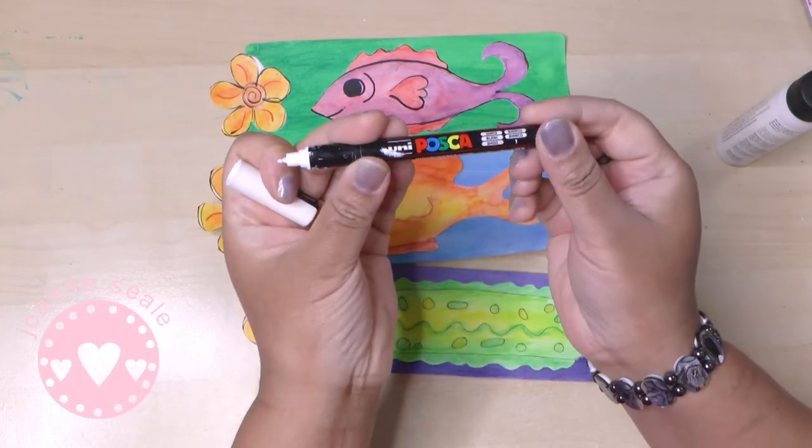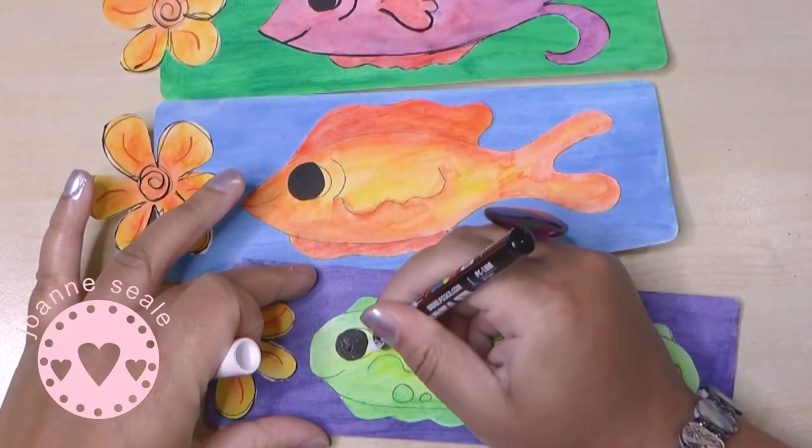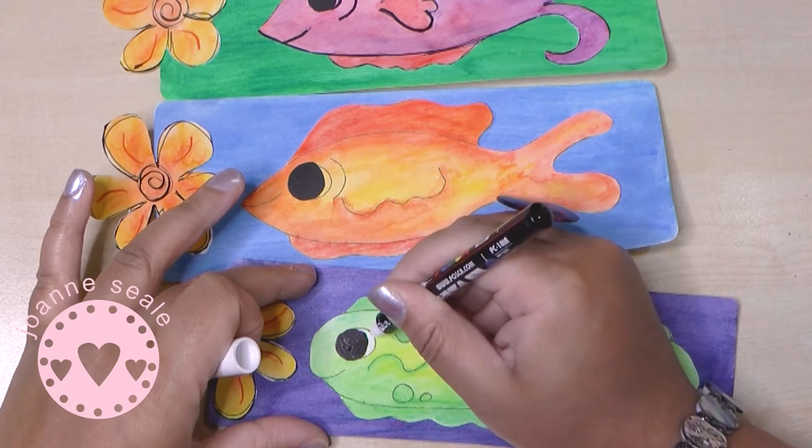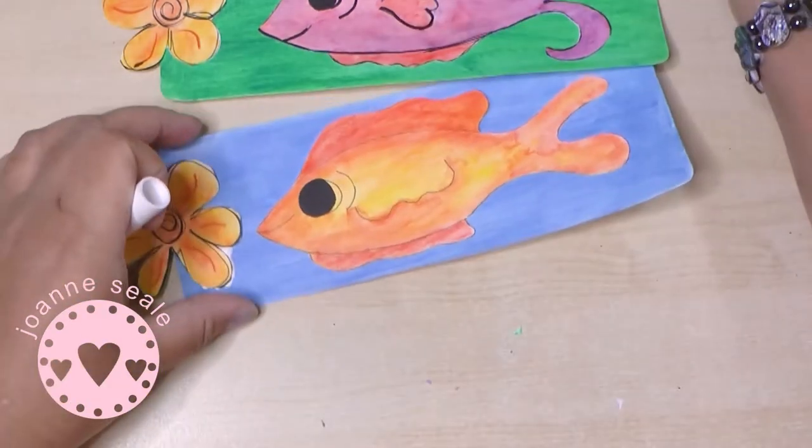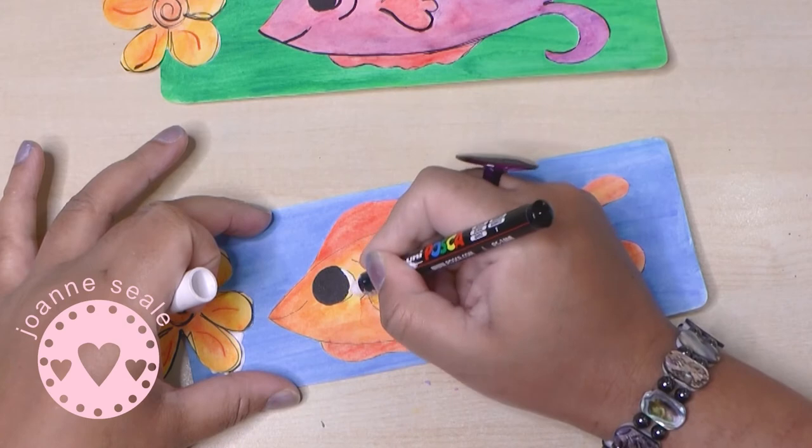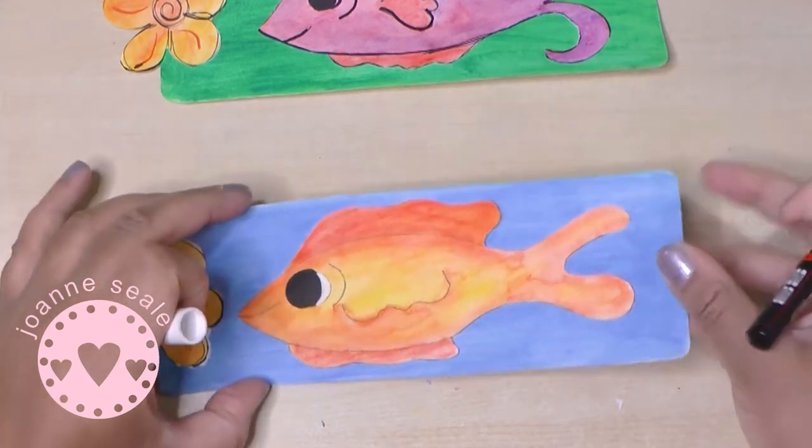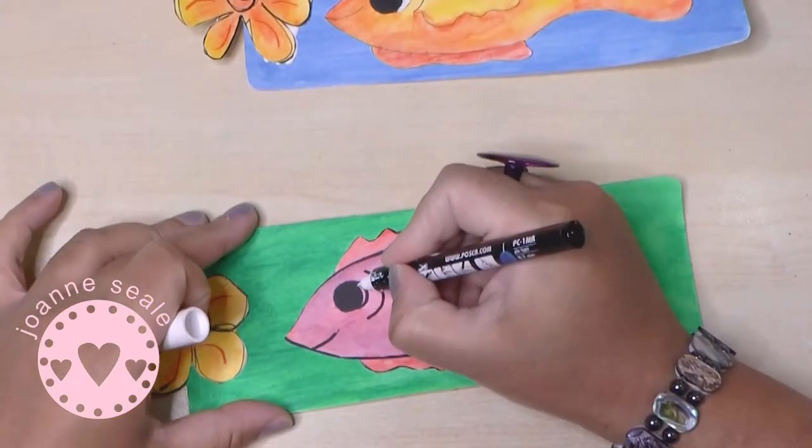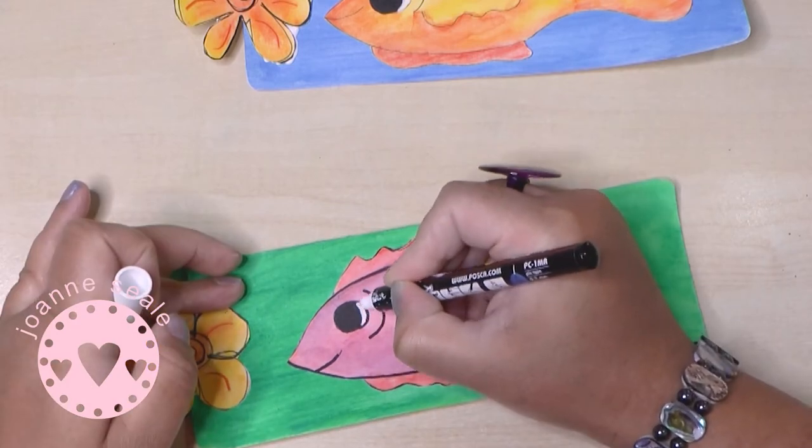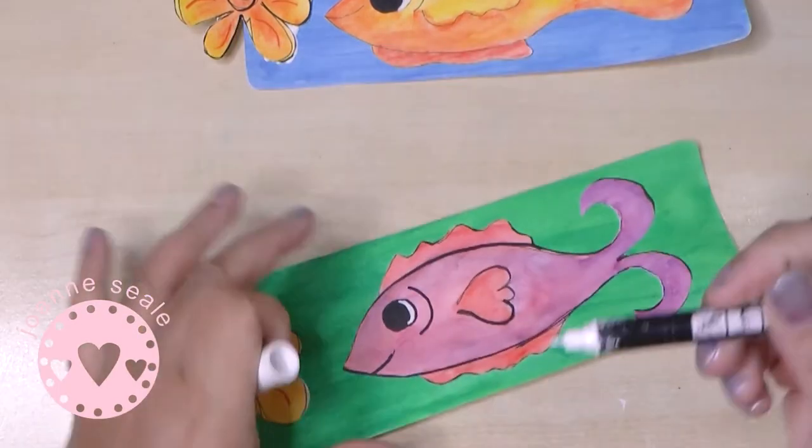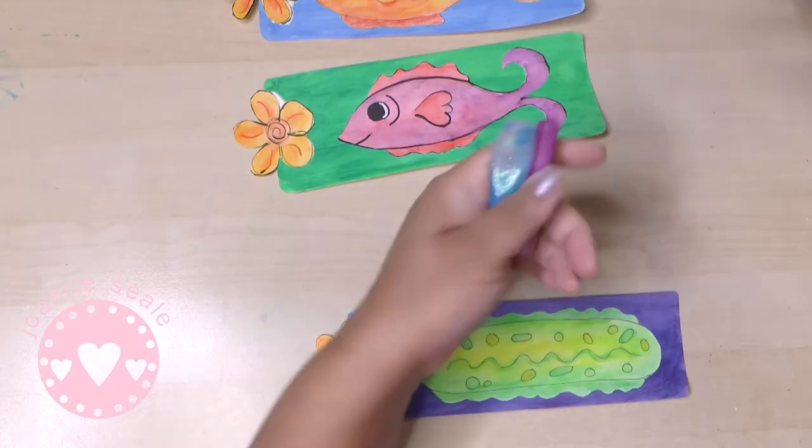Now I'm using a white paint pen just to mark the white of the eyes. If you don't have a paint pen you can use any white, any white at all. If you don't have white you can even leave it, it doesn't need to be white. It just looks more realistic if it's white.